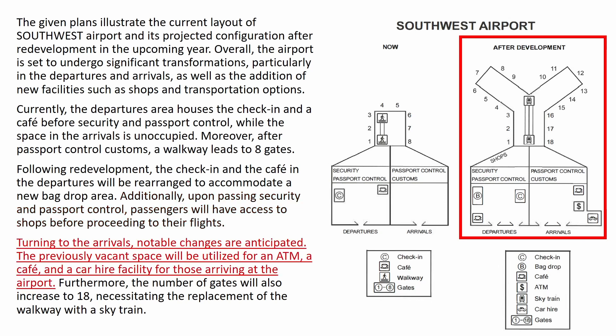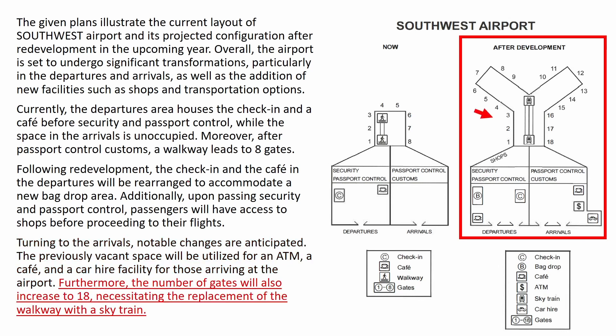'Turning to the arrivals, notable changes are anticipated. The previously vacant space will be utilized for an ATM, a cafe, and a car hire facility for those arriving at the airport. Furthermore, the number of gates will also increase to 18, necessitating the replacement of the walkway with a skytrain.'